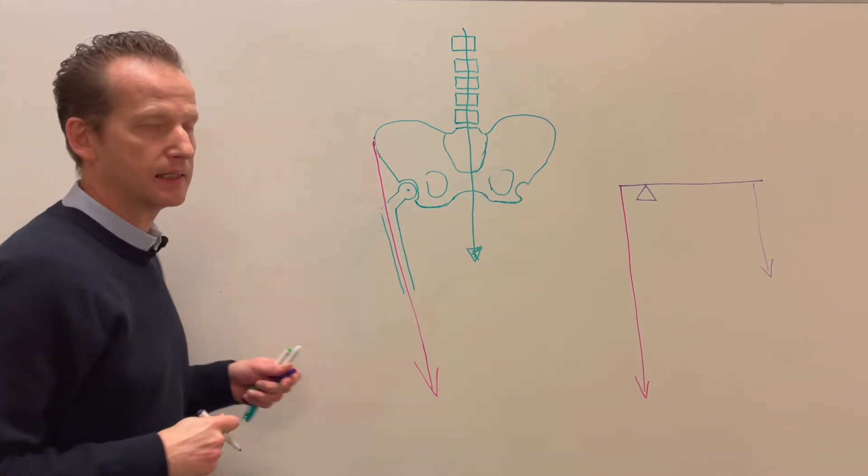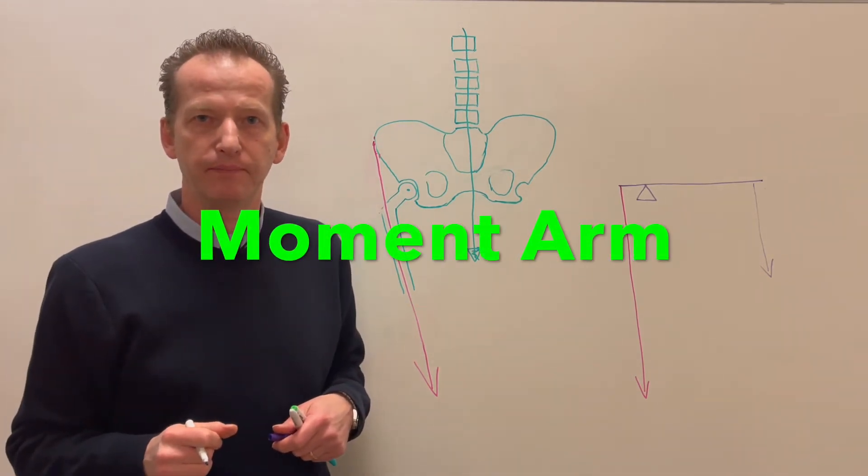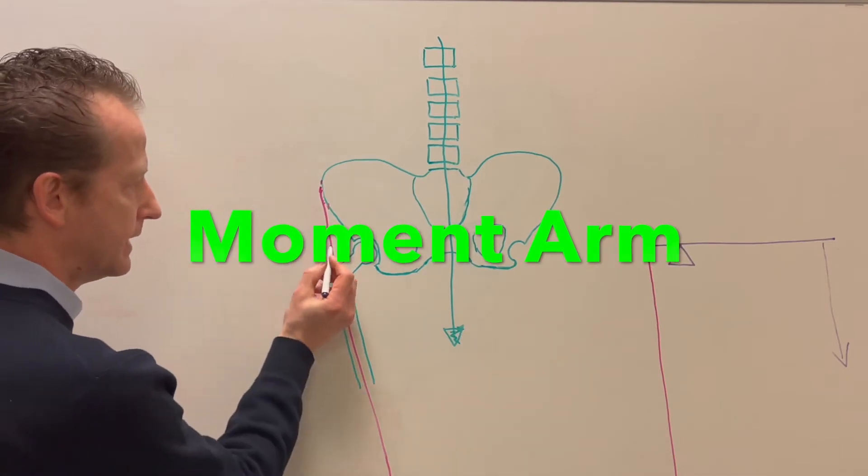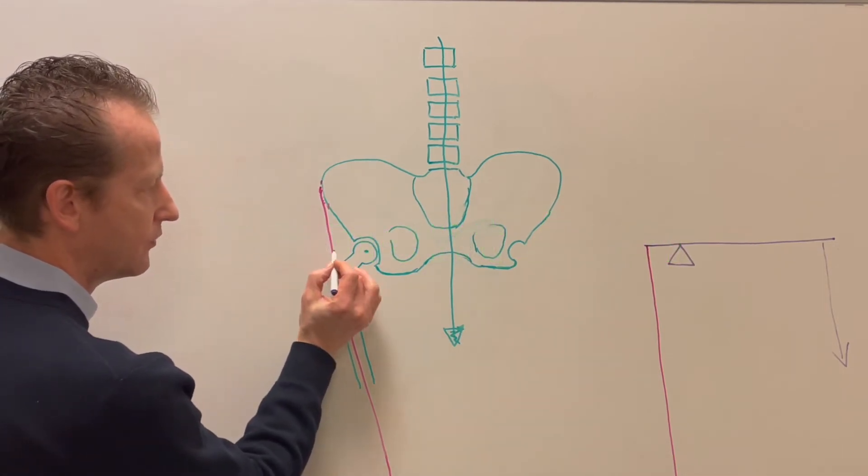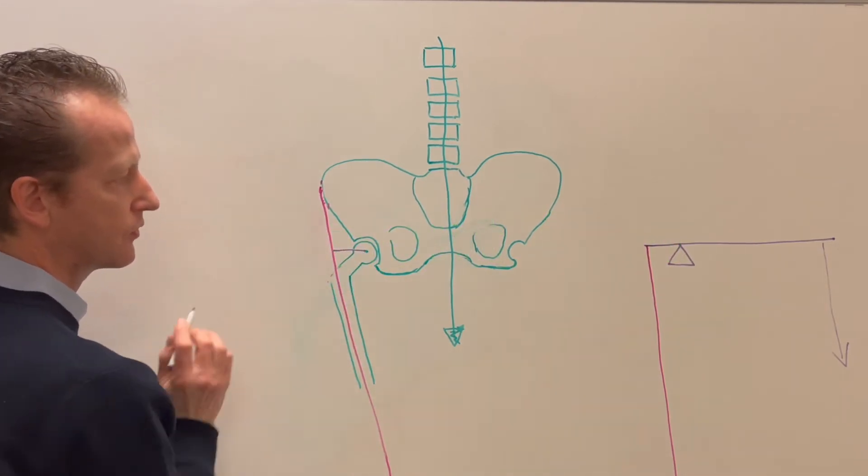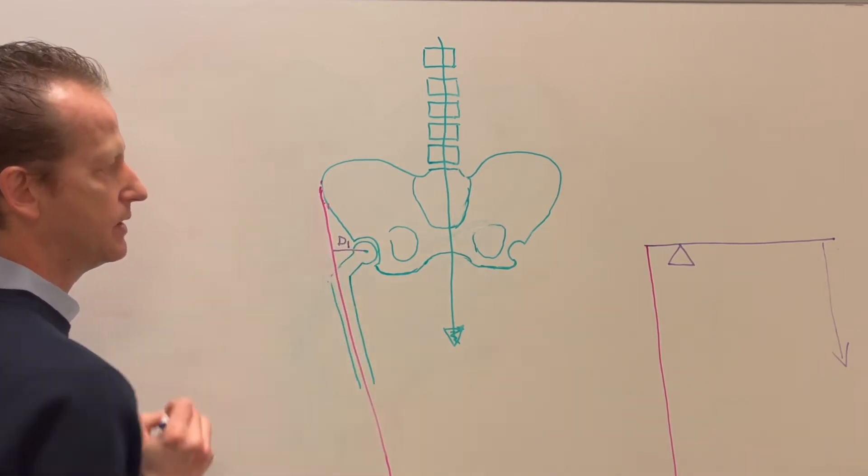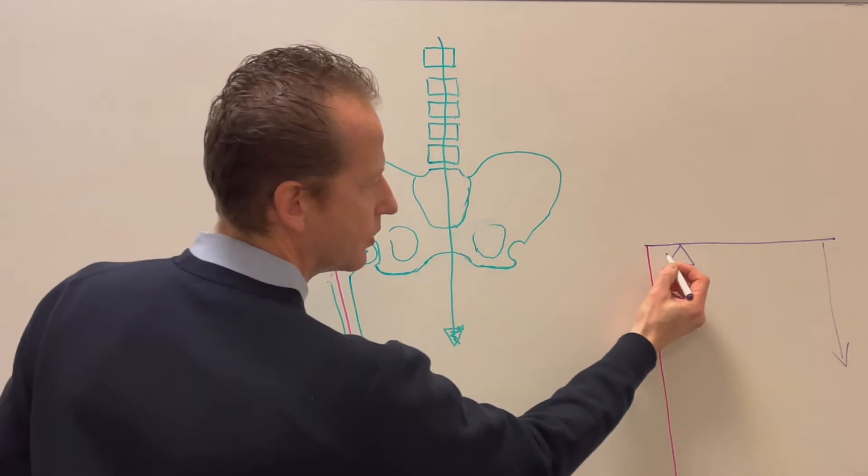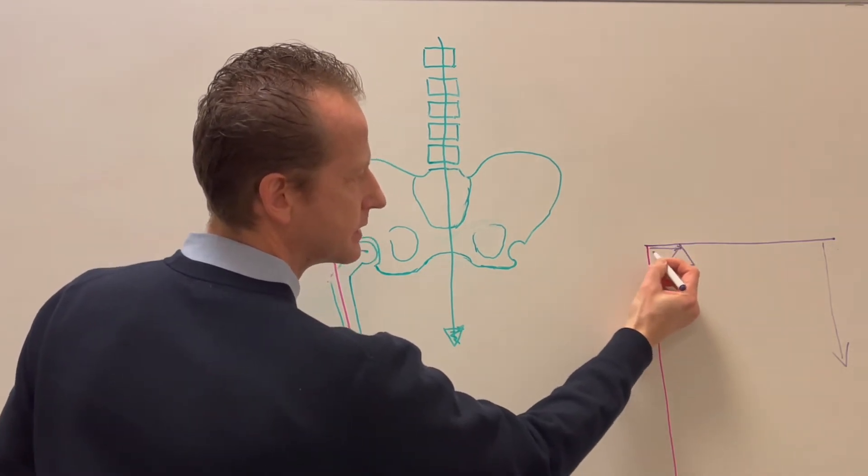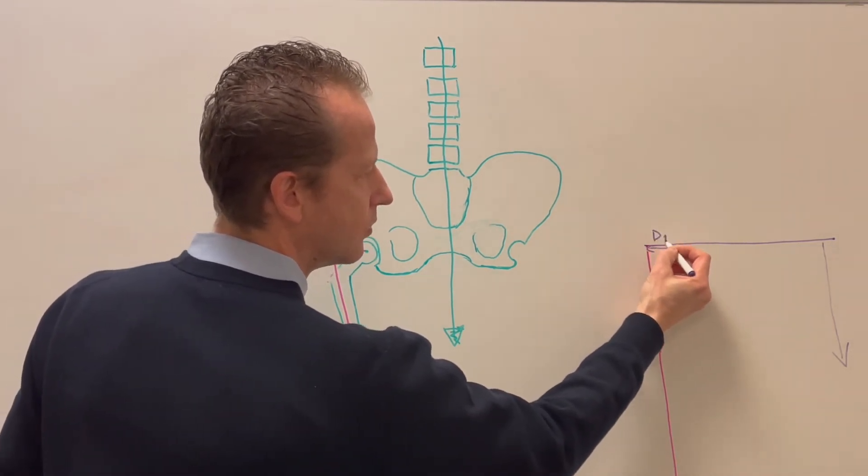What we need to understand is what's called moment arm. It's the distance from the line of force to the center of rotation. This distance, let's call it D1. D1, and it will be equal in our drawing to that distance, D1.